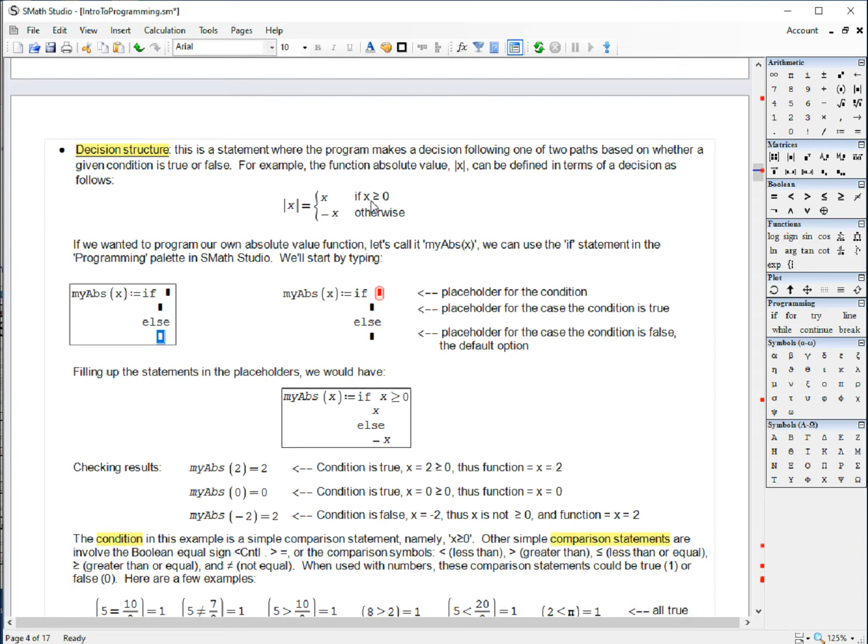So for this case, the condition is x greater than or equal to zero. I'm going to type here x greater than or equal to zero, and if that is the case, I report x, else, I report minus x. And that's how I created this function.